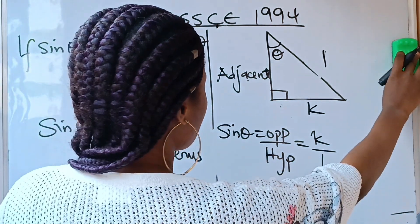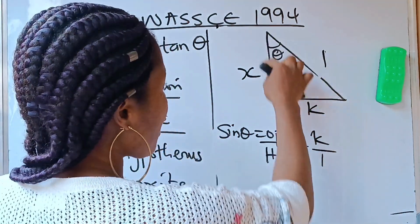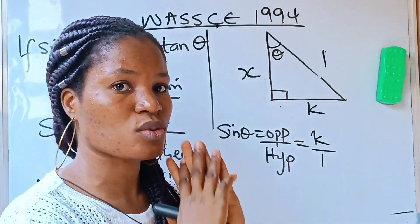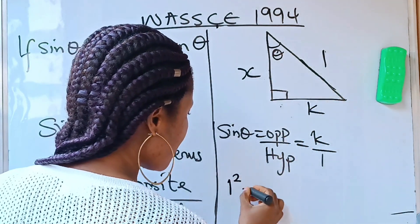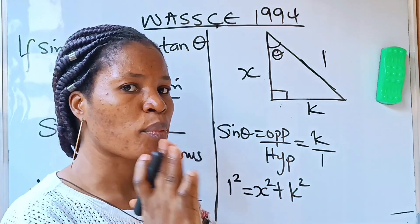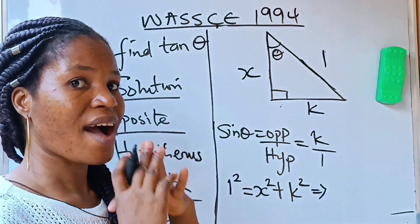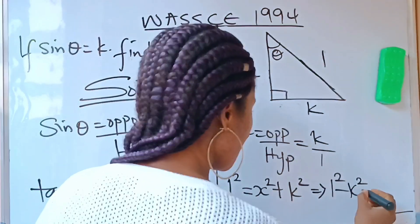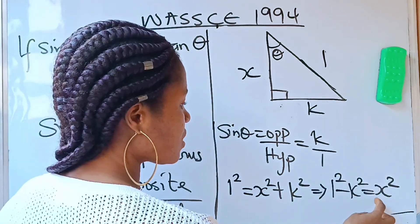Let's call the adjacent x. Remember the Pythagoras theorem: in a right angle triangle, the hypotenuse squared equals the sum of the other two sides squared. So one squared equals x squared plus k squared. Rearranging, one squared minus k squared equals x squared. Therefore, one minus k squared equals x squared.